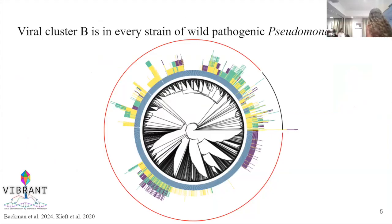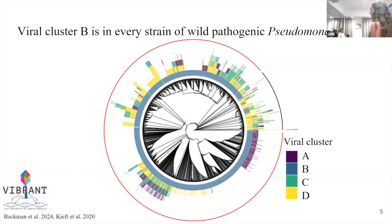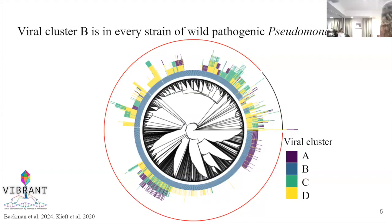This is a lot of data, so I'll break it down for you. Here's a phylogeny of the 1,500 strains. Each of the rings on the outside of the phylogeny indicates one viral sequence found within that strain — some had only one viral sequence, while others had two to three, and one had eight viral sequences. I clustered these viral sequences based on how genetically similar they were to each other, making viral clusters. Anything in viral cluster B has pretty similar viral sequences compared to the other groups.